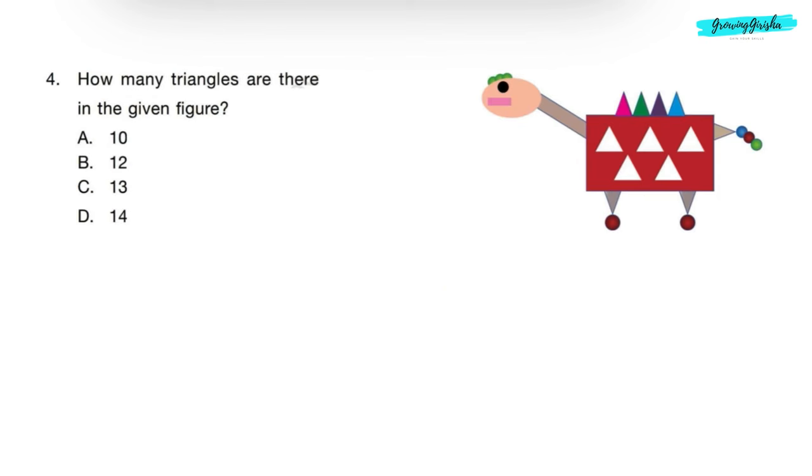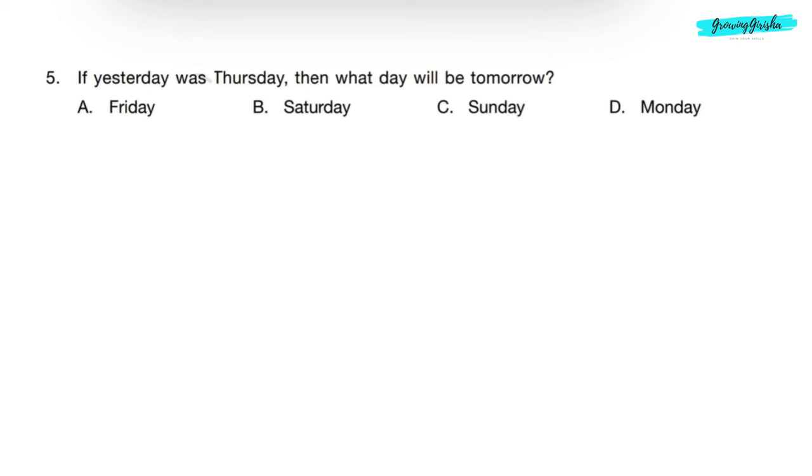Question 4: How many triangles are there in the given figure? Let's count the triangles: 1, 2, 3, 4, 5, 6, 7, 8, 9, 10, 11, 12. There are total 12 triangles. Correct answer is option B.